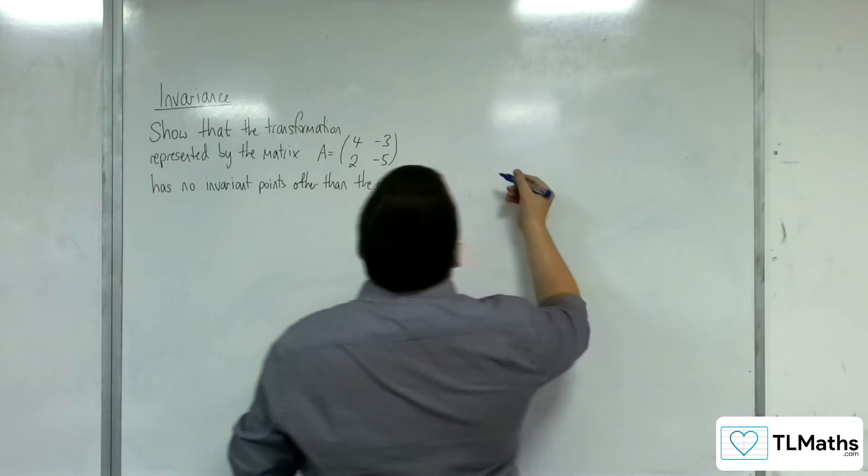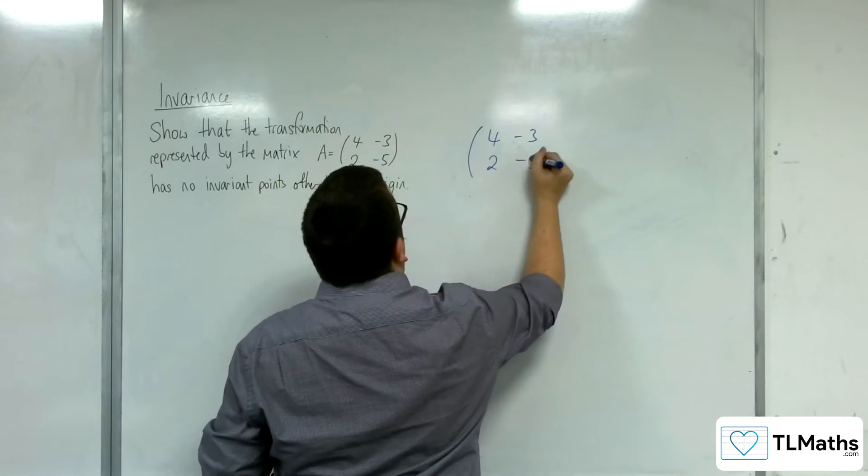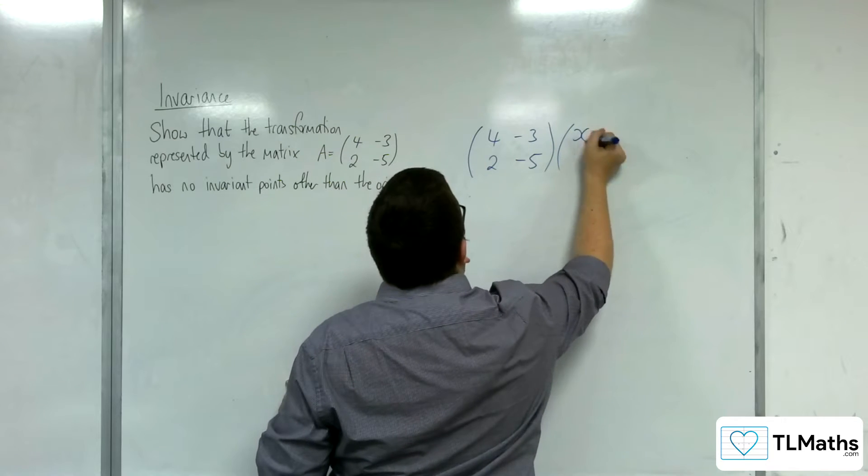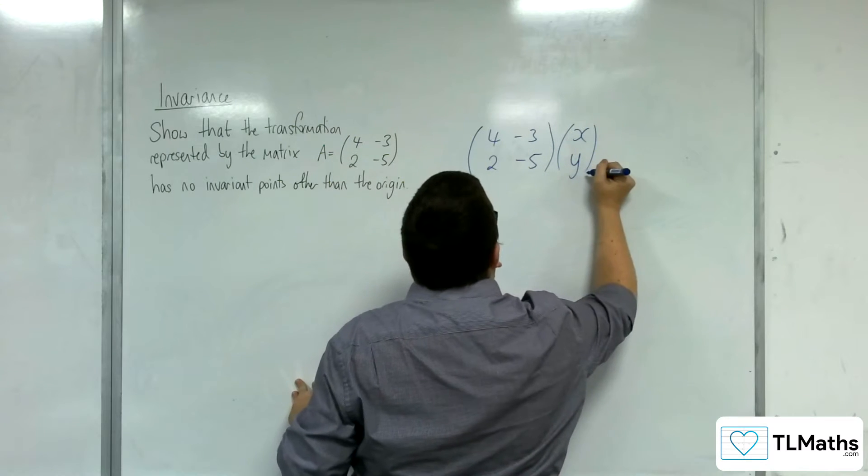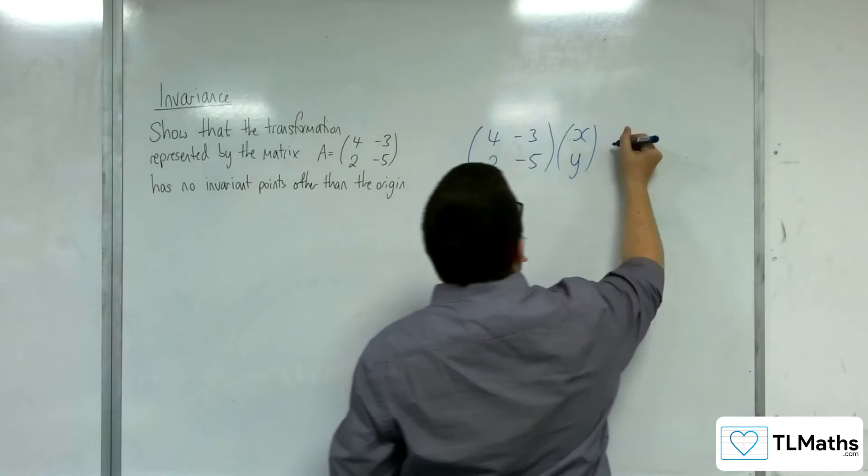So what I want to do is look at the matrix [4, -3; 2, -5] being applied to the coordinates (x, y). If there are invariant points, then this would be equal to (x, y).